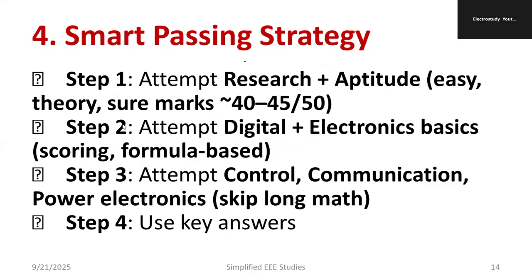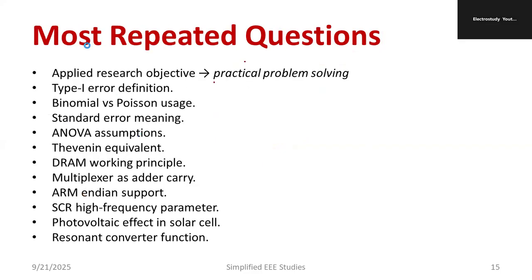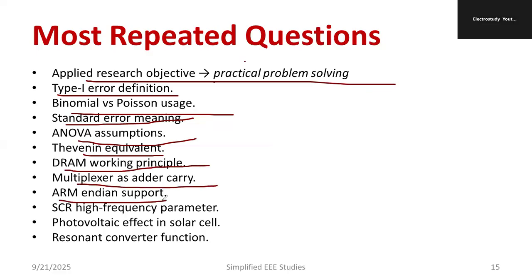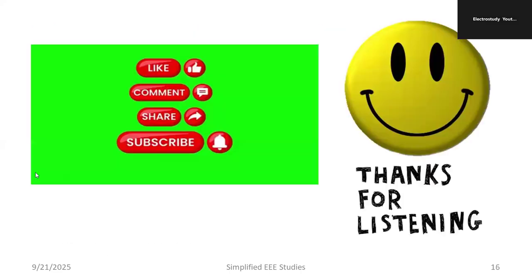The most repeated questions I observed from previous year papers are: applied research objectives and practical problem solving; type 1 error definition; binomial and Poisson usage; standard error meaning; ANOVA assumptions; Thevenin's equivalent; DRAM working principle; multiplexer as adder or carry; ARM endian support; SCR high frequency parameters; photovoltaic effect; and resonant converters. These topics are very important.